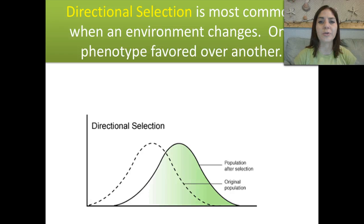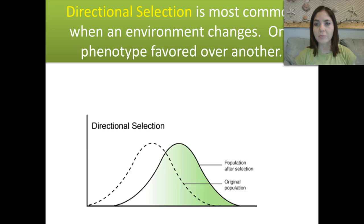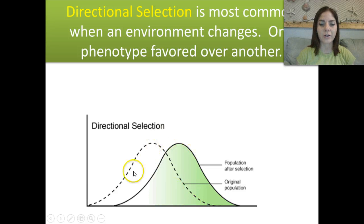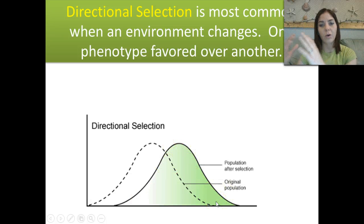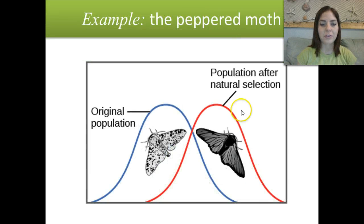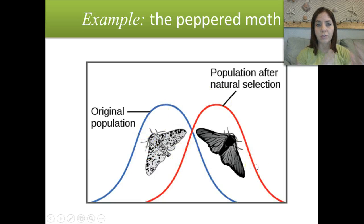As a wrap-up, we're going to go through the different selection graphs. Directional selection is the most common — it occurs when an environment changes and one phenotype is favored over another. This used to be our selection curve in the middle; something happened and we had a shift. The example is our peppered moths: before the Industrial Revolution, white moths were favored; after, black moths were favored. So we had a shift in one direction — originally more white peppered moths, then after the Industrial Revolution, a shift toward black peppered moths.